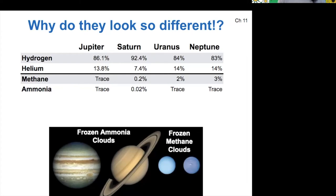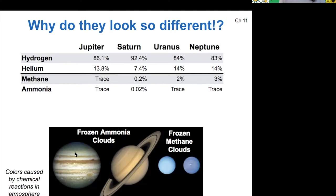On Jupiter and Saturn, ammonia constitutes most of the clouds. These frozen ammonia clouds in the upper atmosphere are the reason we see tannish, rusty red, and brown colors. In contrast, Uranus and Neptune are both blue because their clouds are made of frozen methane, which scatters blue light and so appears blue. The specific colors in Jupiter's banding are caused by chemical reactions in its upper atmosphere as ultraviolet light from the sun interacts with molecules of methane and ammonia.